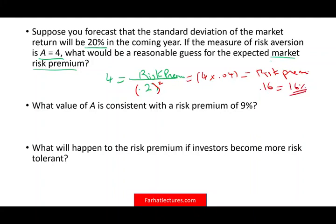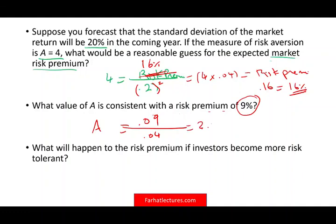What value of A is consistent with a risk premium of 9%? We change the risk premium from 16% to 9%, keeping the variance at 0.04 in the denominator. We take 0.09 divided by 0.04, which gives us A equal to 2.25.